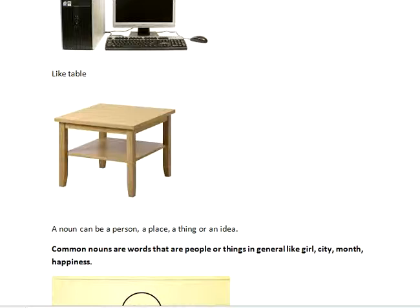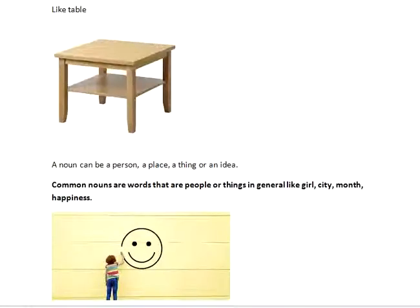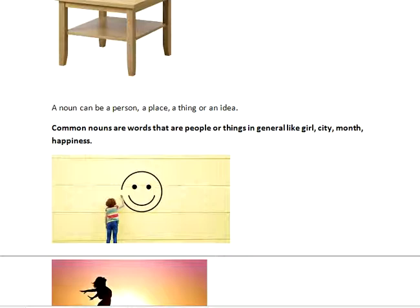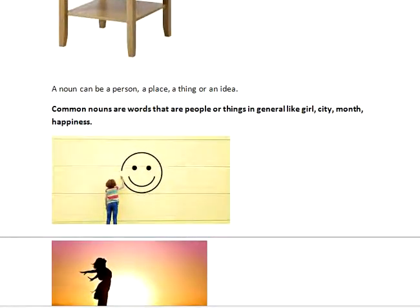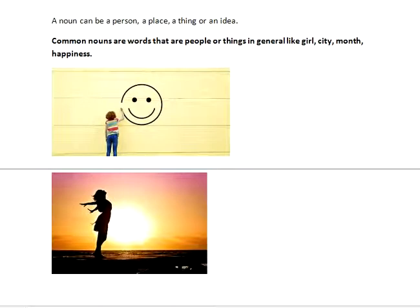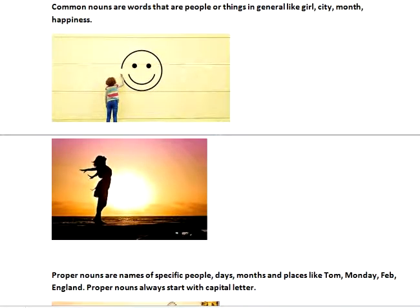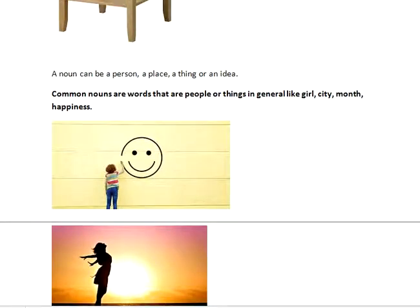What are common nouns? Common nouns are words that refer to people or things in general, like girl, city, month, happiness. These are words we use in a general sense to name things — for example, happiness, sorrow, sad, any month, city, boy, girl, man, woman, mountain, etc. These are the common words we use to represent a common noun.